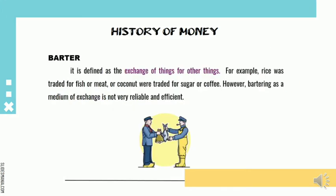Before barter came into practice, there was very little need for exchange as people lived very simple lives. They did farming, planting, fishing, and hunting, and they provided the food that they needed in order to survive.